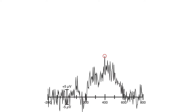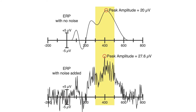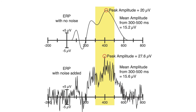See how noise has distorted the peak amplitude of this waveform? Another problem with peak amplitude is that it's biased by the noise level — the noisier the data, the bigger the peak. For example, here we're looking at identical waveforms, except the bottom one has noise added to it. See how the peak of the noisy waveform is 27.6 microvolts, whereas the peak of the clean waveform is 20 microvolts? So it's not valid to compare peak amplitudes in two groups or conditions where the noise level differs. This can occur when you're comparing a patient group to a control group, or when one condition has more trials than the other. However, mean amplitude isn't biased by the noise level — noise is equally likely to make the mean amplitude larger or smaller. So peak amplitude gets consistently larger as the waveforms get noisier, but mean amplitude doesn't.